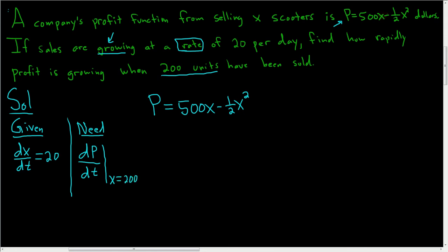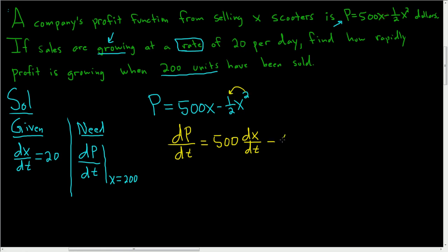All we have to do now is take the derivative with respect to time of both sides of the equation. So dP/dt equals 500 times dX/dt. For the second term, X is a function of time, so we use the power rule: bring the 2 down, giving 2 times one half, which is just minus X to the first power, times the derivative of the inside, dX/dt.